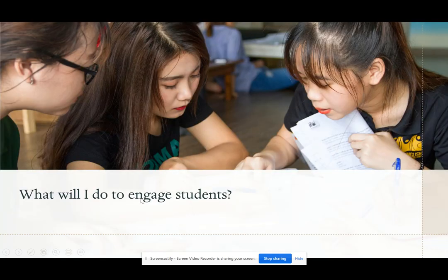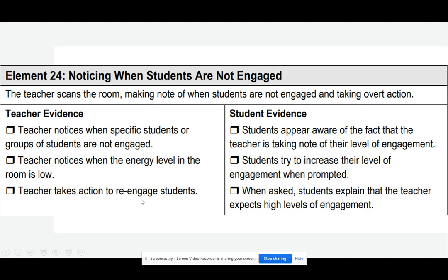What can teachers do to engage students? As the observer, you should see that the teacher notices when specific students or groups of students are not engaged, and when the energy level is low. When you observe the students, students should be aware that the teacher is taking note of their level of engagement and try to increase their level of engagement when prompted.